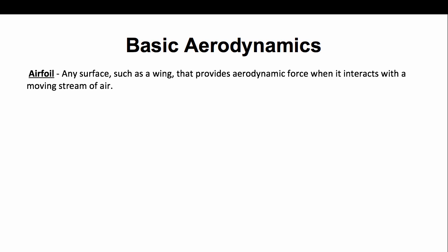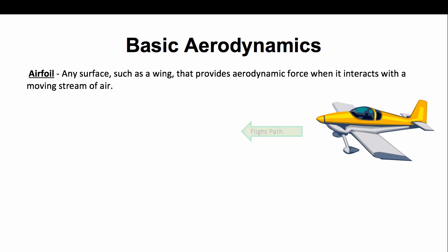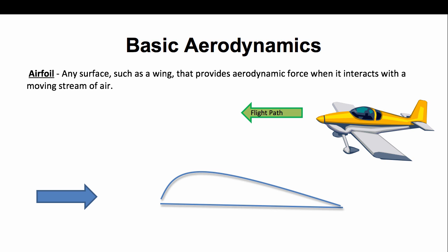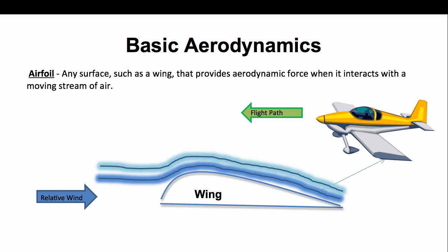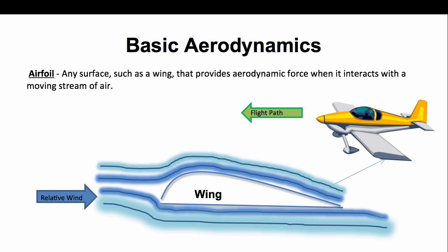An airfoil is any surface such as a wing that provides aerodynamic force when it interacts with a moving stream of air. When given a flight path and an opposite relative wind, it's important to remember that the air flow over the surface of the wing will have a higher velocity than the air flow under the wing. It's also important to note that the circulation of the air stream about the airfoil is an important factor in the generation of lift.